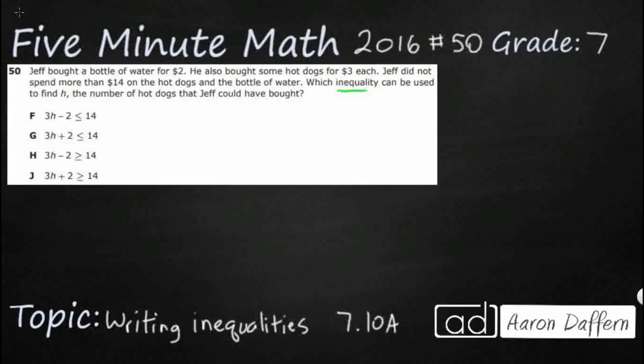So let's back up and see exactly what's going on. Jeff is buying a water bottle for $2, so that's a given. I'm just going to write this $2 right here. He bought some hot dogs and take a look at this. H, the number of hot dogs. So that is our unknown, H. That makes sense.